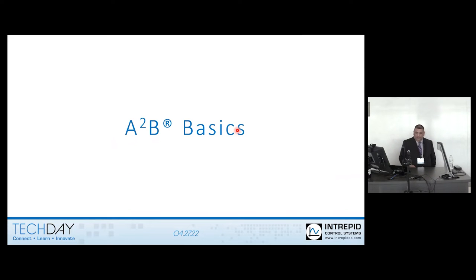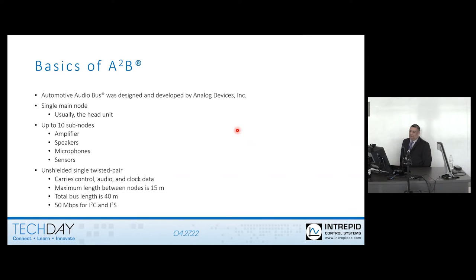I'm not going to deep dive every single aspect of it, but just some of the basics so we can get some of the terminology out of the way. A2B stands for automotive audio bus. This was actually designed and developed by Analog Devices. This system can support up to 11 nodes. You're going to have one main node and you can have up to 10 sub nodes. Now from a terminology perspective, the main node used to be called master and the sub nodes used to be called slaves. That terminology was recently changed, so I'm going to try and stick to the new terminology.